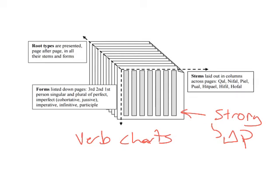And across this direction, each of the columns will be one of the different stems, kal, nifal, piel, pual, hitpael, hiphil, and hofal, so that these can be compared one right next to the other.